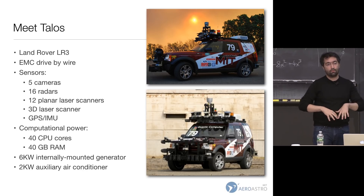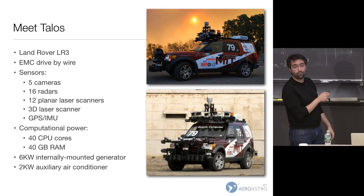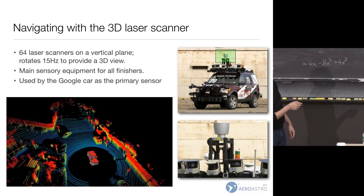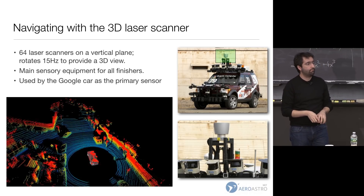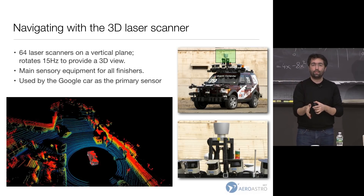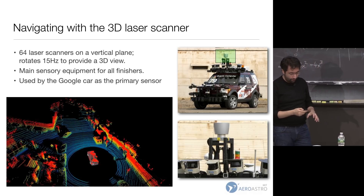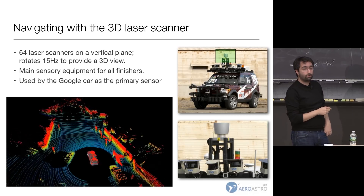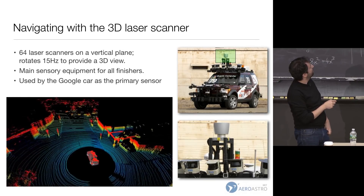The number of sensors and computers was large, but the sensor suite was very similar to the other finishers. One important sensor was the 3D laser scanner — it sits on top of the vehicle, looks like a Kentucky Fried Chicken bucket. It has 64 lasers that measure range, stacked on a vertical plane that rotates at 15 hertz, giving you a 3D point cloud. If you drive with it in Harvard Square, this is what the raw data looks like, colored by height. You can easily pick up a bus, a building, a person.